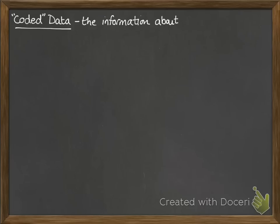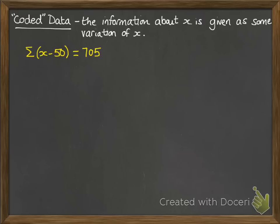So we have the information given to us about x, but it's got some sort of variation on x. So for example, they might tell you instead of the sum of x, they'll tell you the sum of x minus 50.